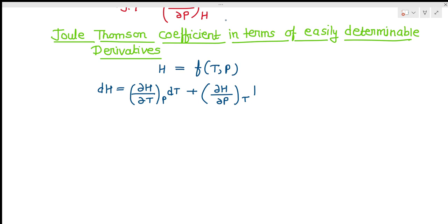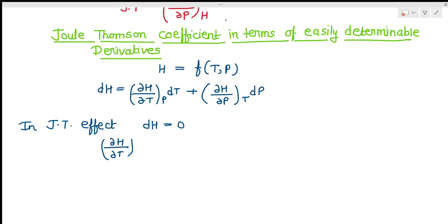This we have seen in our previous lectures. When I started thermodynamics, I gave you all the fundamentals of thermodynamics. If you have not seen those videos, you can find their links in the description box. Now, in the Joule-Thompson effect we know that dH is equal to zero. So we can write: (del H / del T) at constant P · dT + (del H / del P) at constant T · dP = 0.